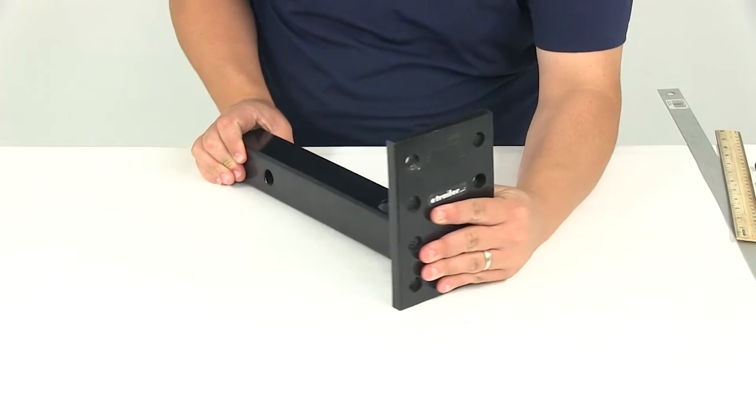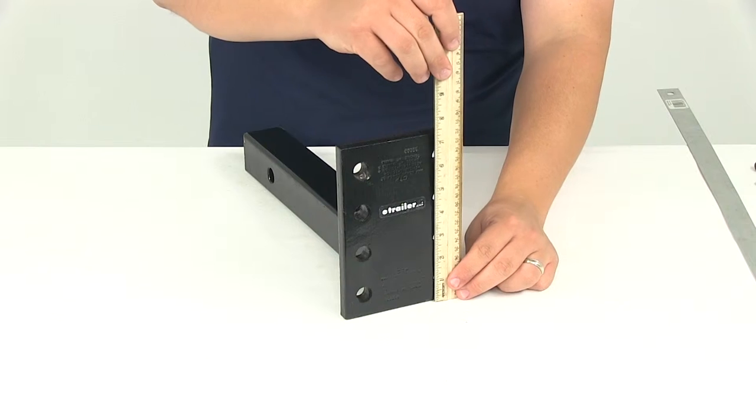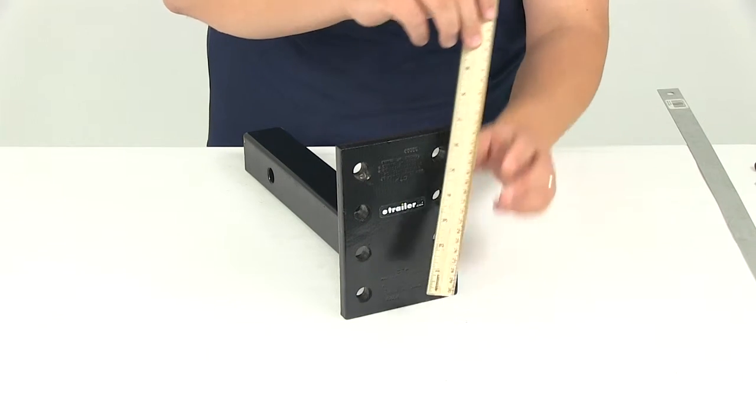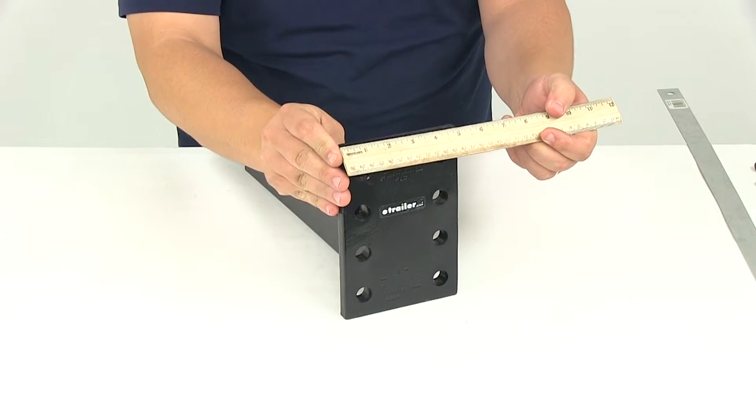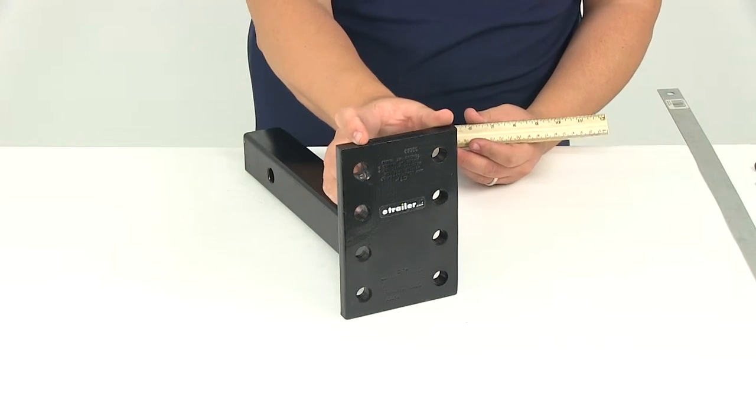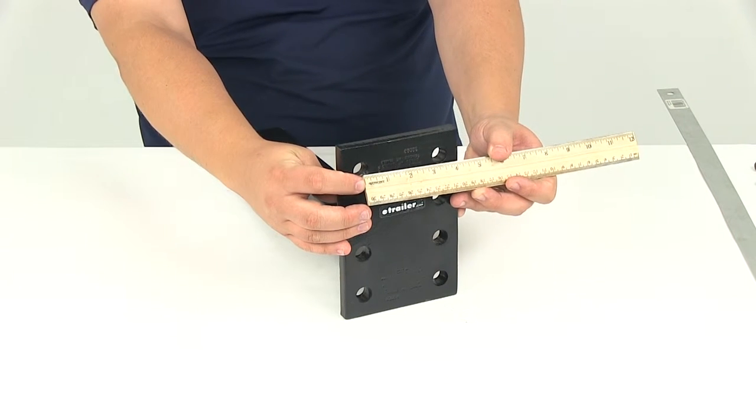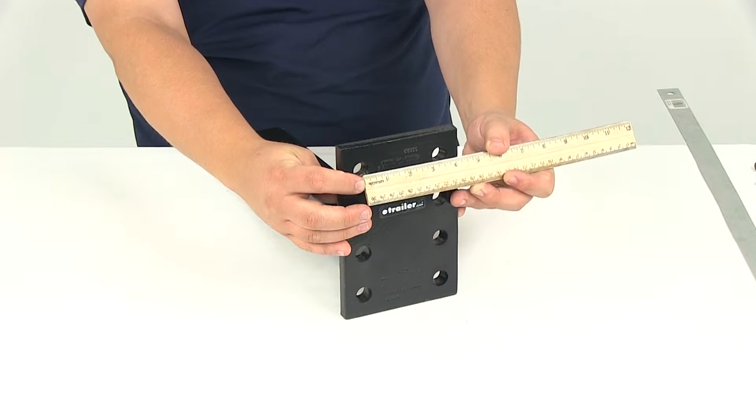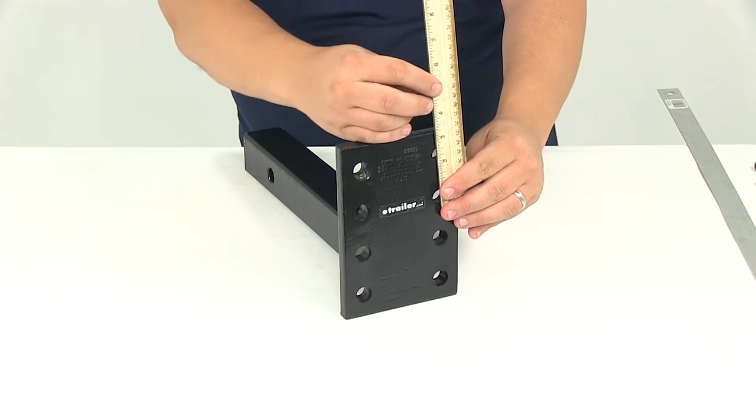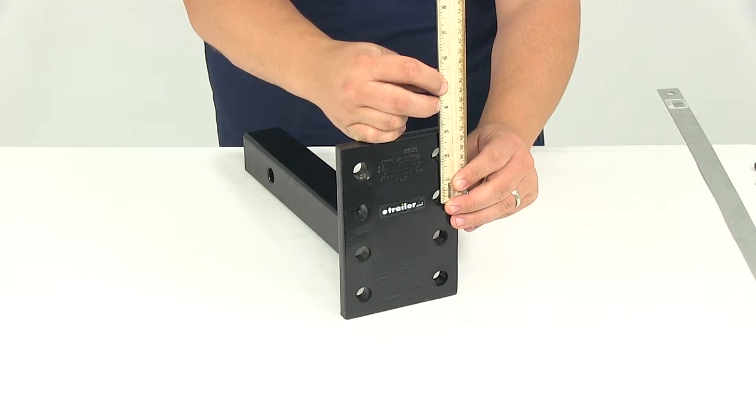Here at the front, our plate is going to measure seven and a half inches tall by five inches wide. If we measure the hole spacing horizontally from center on center, it's going to give us a measurement of 3 and 3 eighths of an inch, and then vertically center on center, it's going to measure an inch and three quarter.